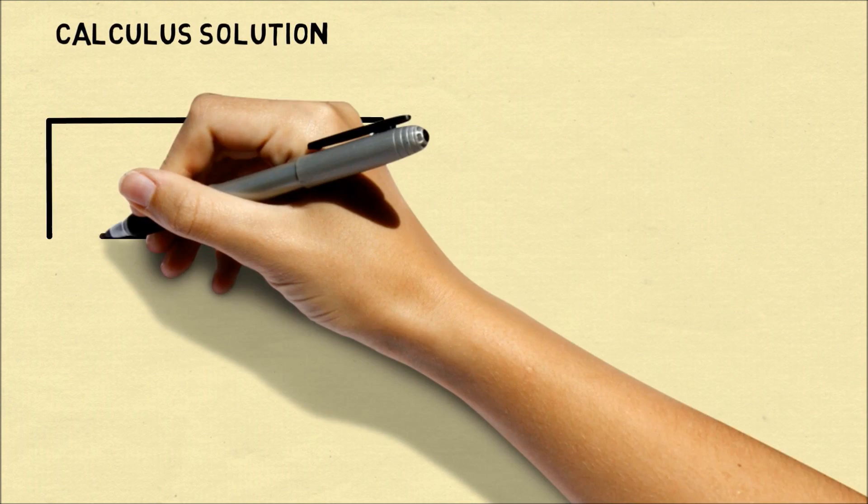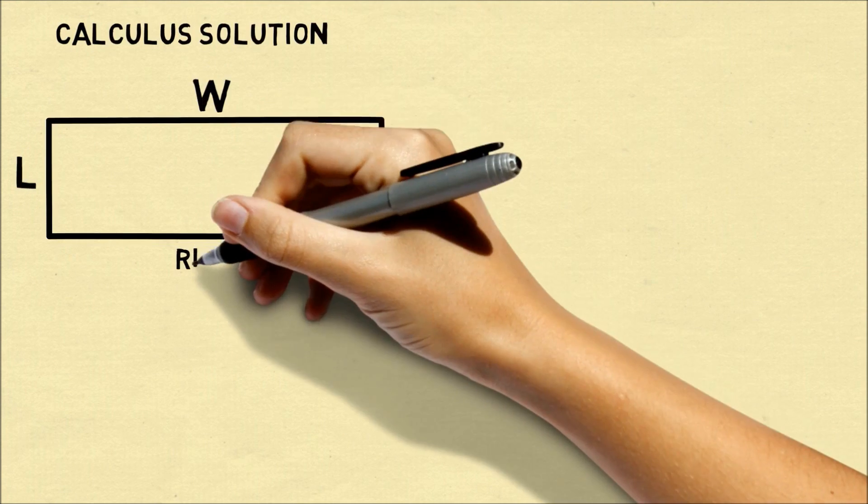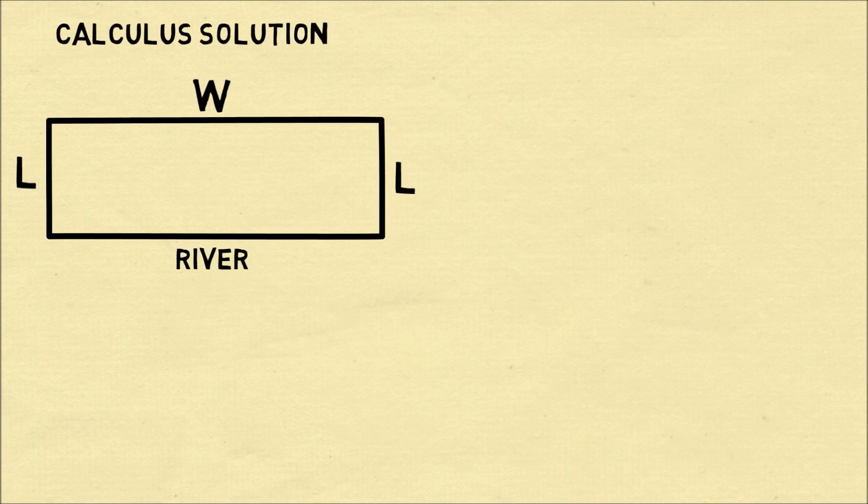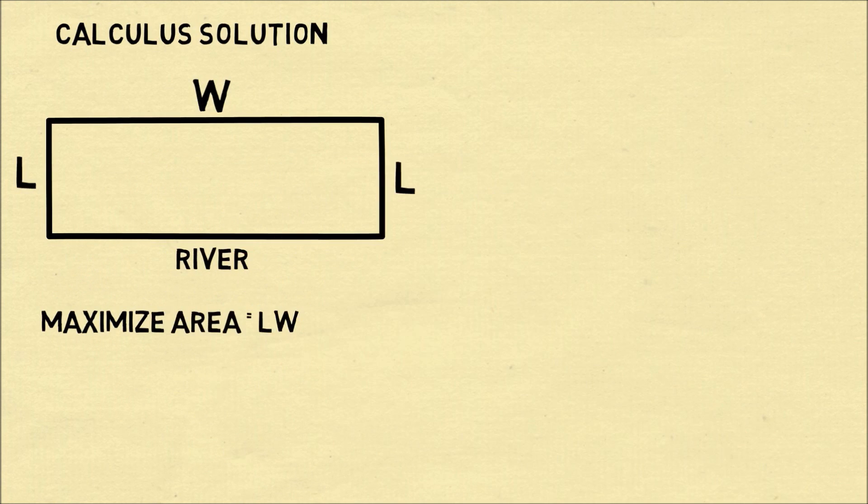All right, so the elegant solution will be using geometry but I'm going to present the calculus solution first. So the geometry of the situation is we have a rectangle of which one side is the river and we have two sides that are the length and one side which is the width.